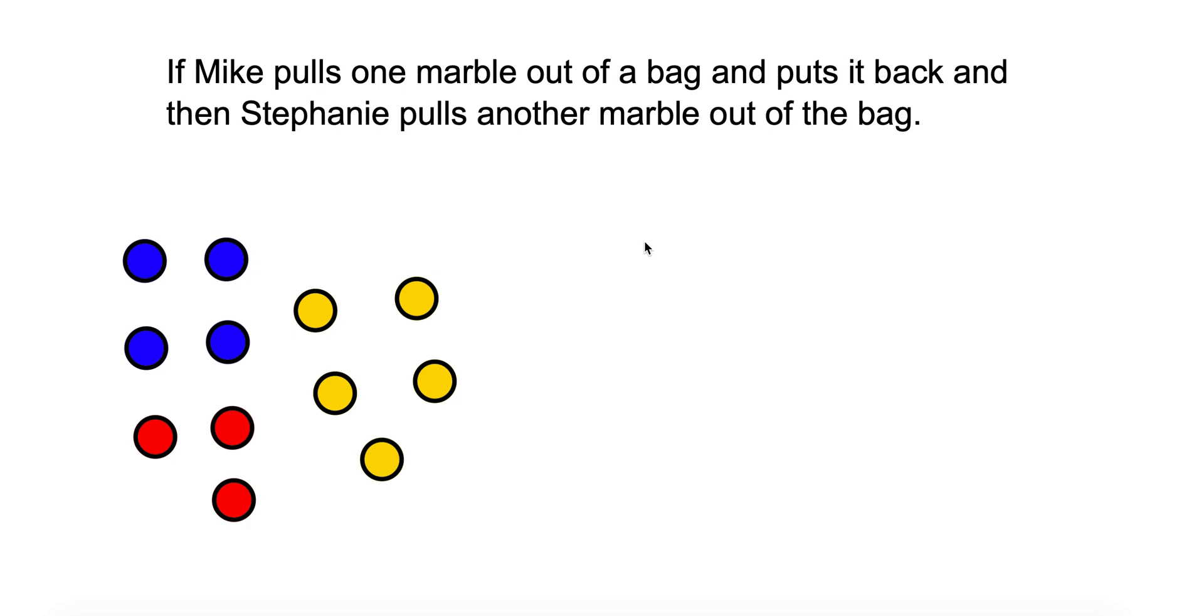Well the flipping the coin and the spinning the spinner don't affect each other. So even though those probabilities are different, they would still be independent because the probability of flipping a coin does not affect the probability of what you get on a spinner.